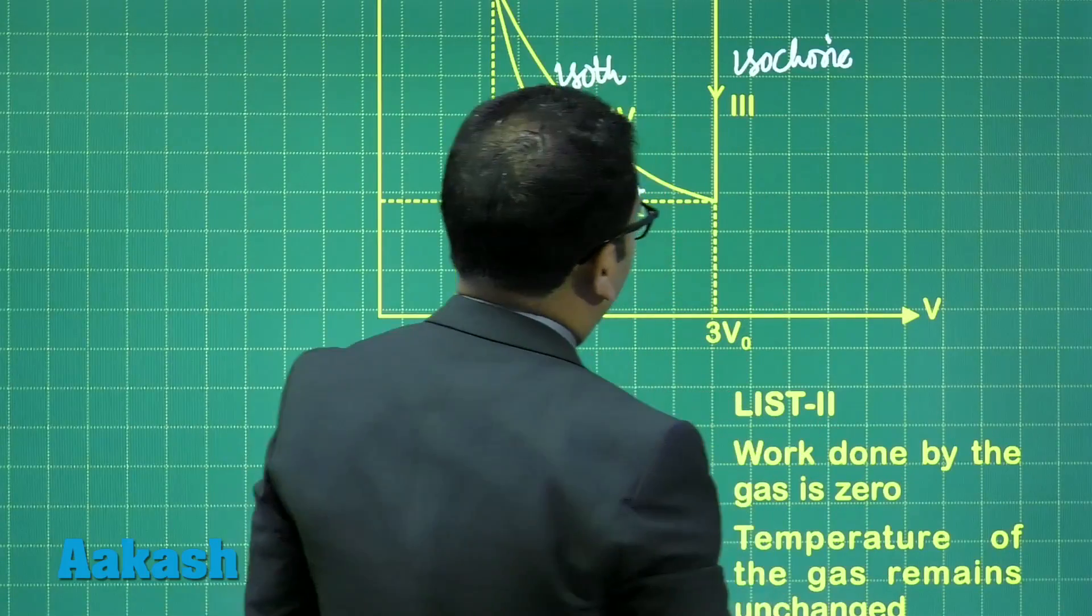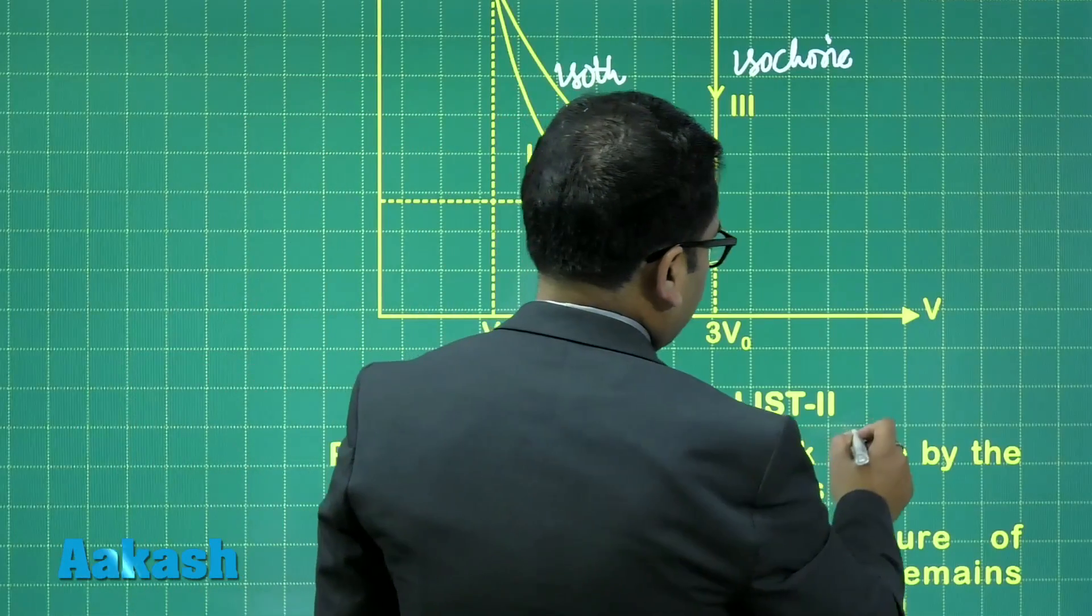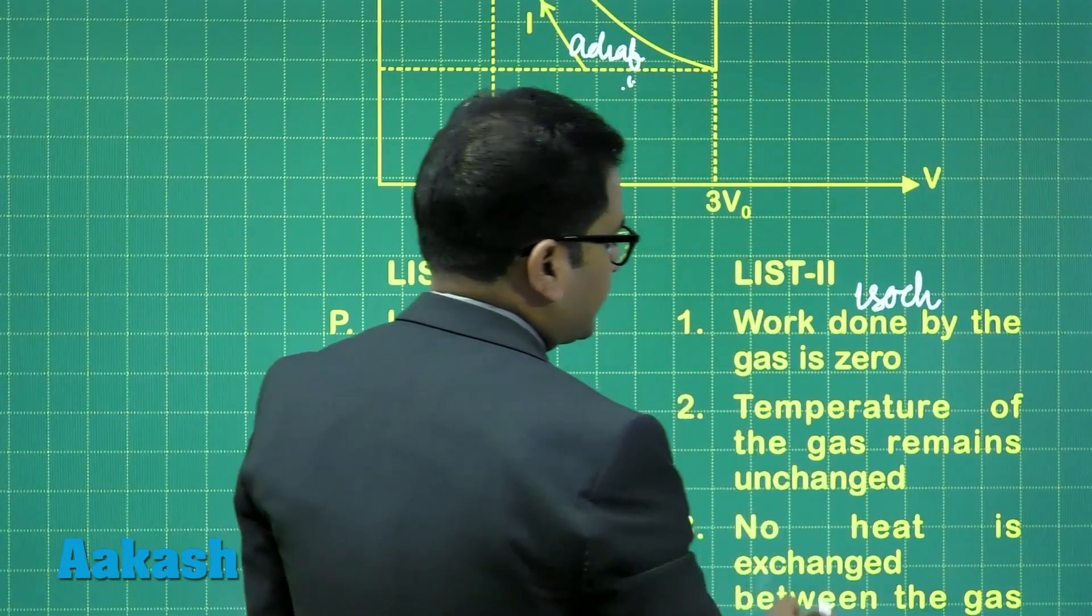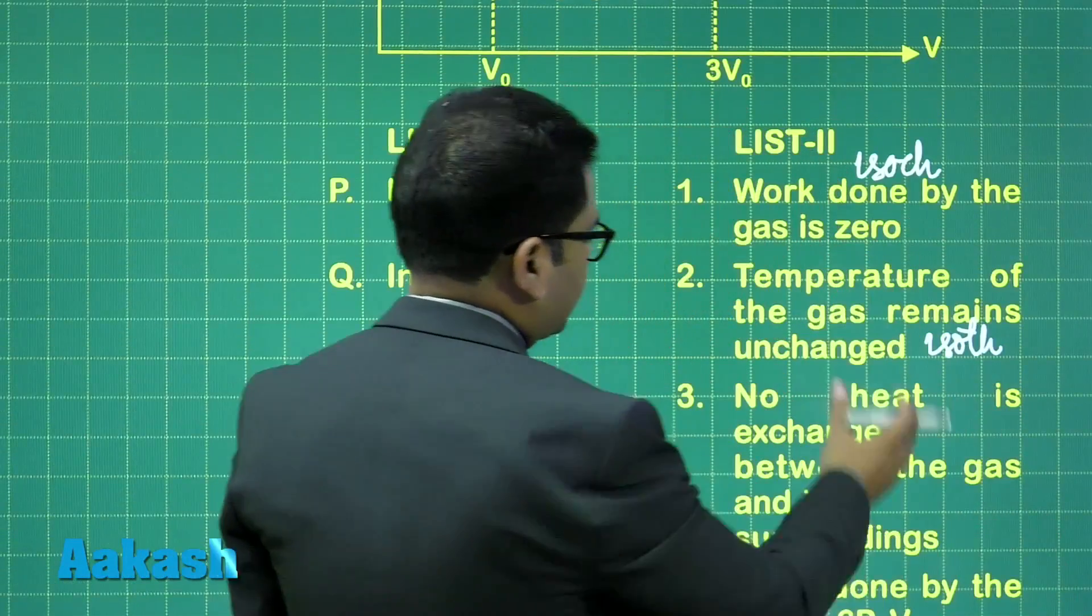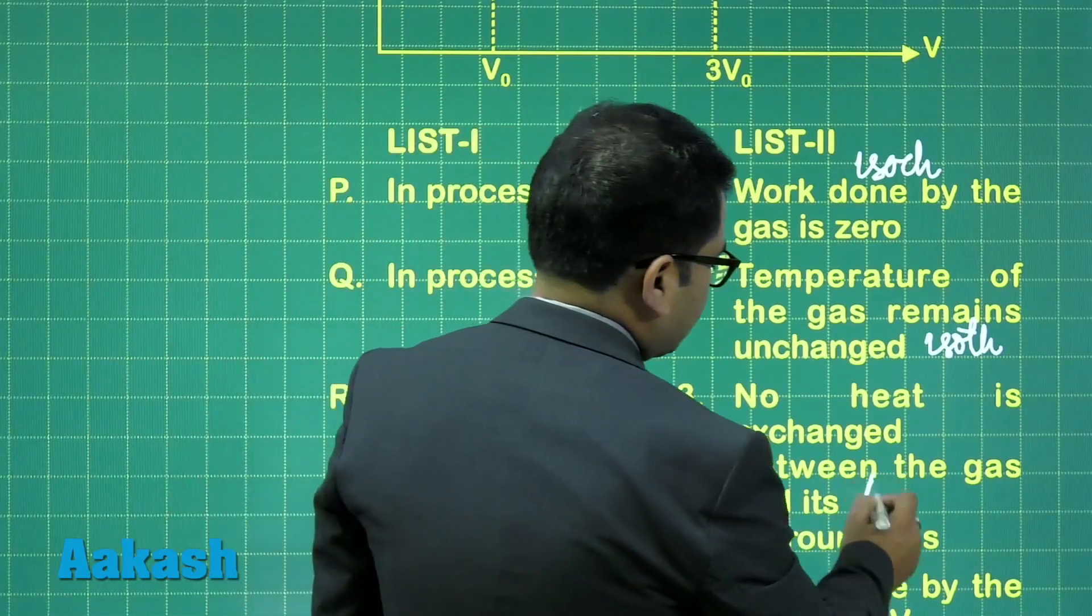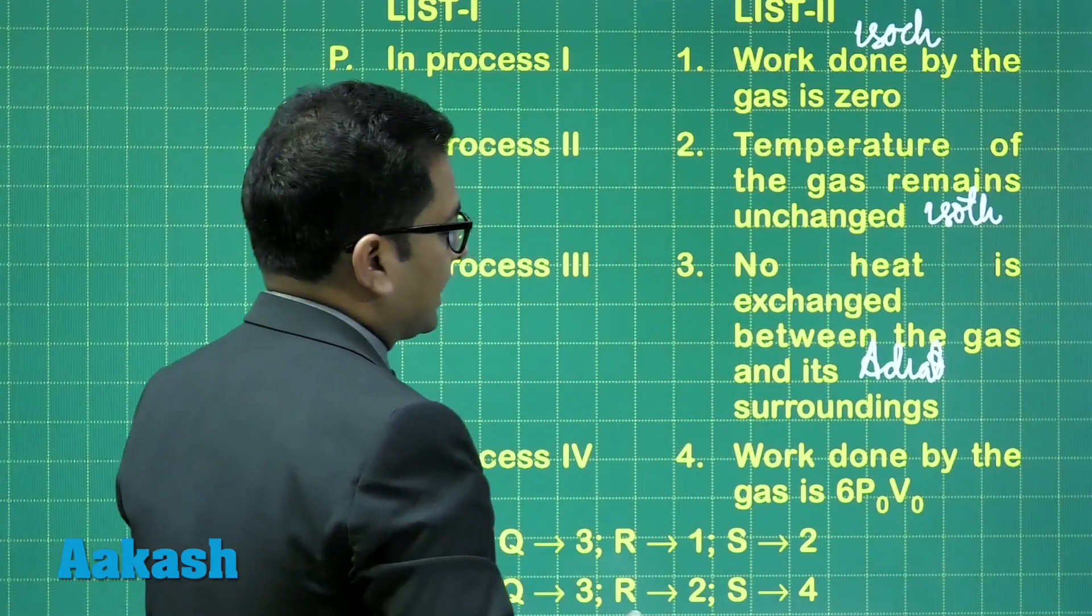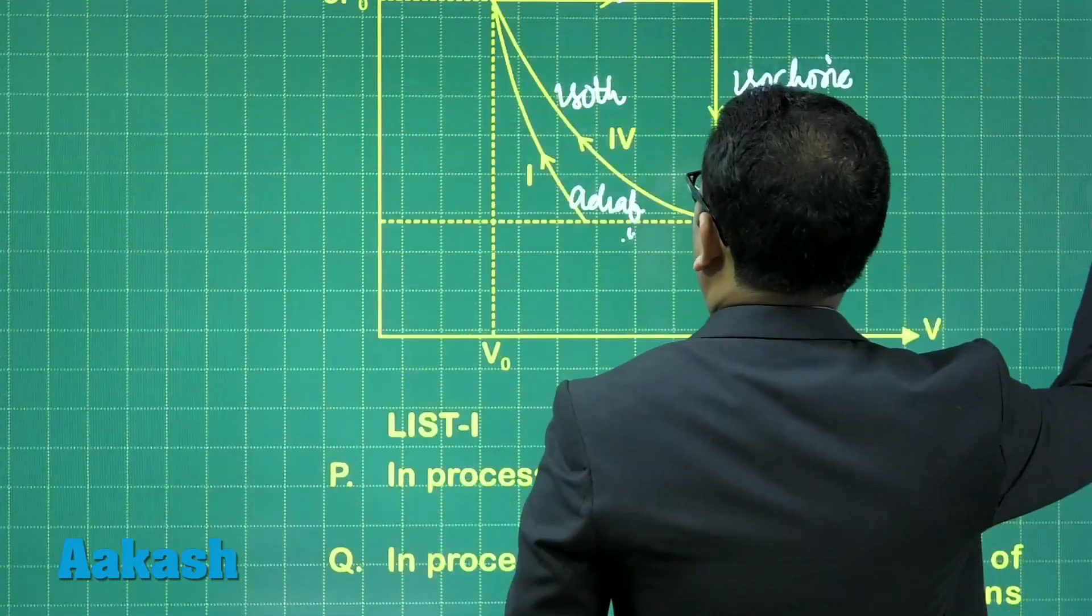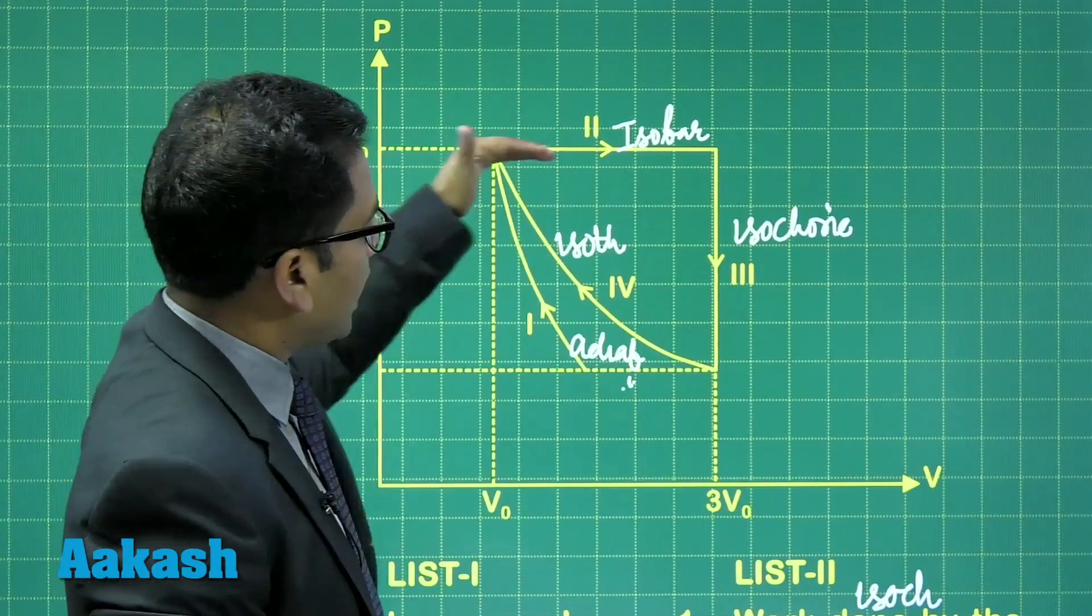Now matching the statements: work done by the gas is zero corresponds to isochoric. Temperature remains unchanged is isothermal. No heat is exchanged between gas and surroundings is adiabatic.